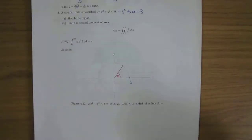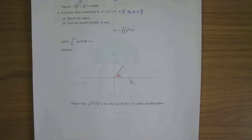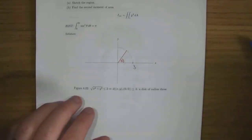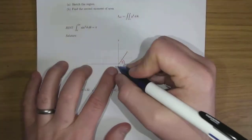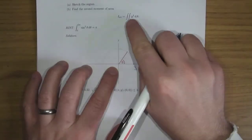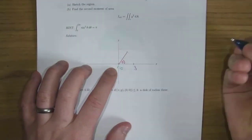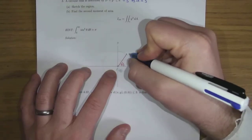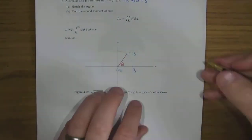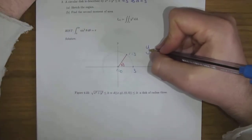We'll write down the second moment of area of the spoke by adding up y squared dA from r equals zero up to r equals three. As before, y = r sin θ and dA = r dr dθ. We're adding up y squared dA.